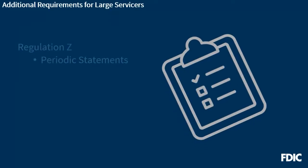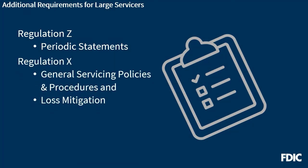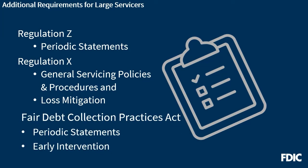We will discuss periodic statement requirements in Regulation Z, which do not apply to small servicers. This video also highlights Regulation X requirements that provide small servicer exemptions, which are the general servicing policies and procedures and some of the loss mitigation rules. Additionally, we will discuss the Fair Debt Collection Practices Act, or the FDCPA, in connection with the requirements for periodic statements and early intervention with delinquent borrowers.